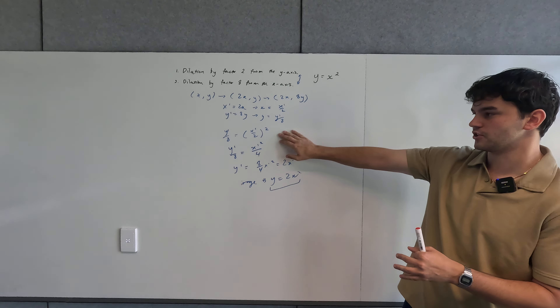So our image equation is y = 2x², which is interesting. We've had two dilations — one from the y-axis and one from the x-axis — and it has actually simplified to a pretty simple equation. y = 2x² is just a dilation by a factor of two from the x-axis. So these two dilations have been combined and simplified to become just that single dilation.